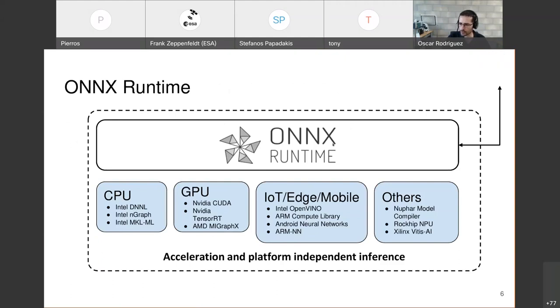We chose to use ONNX runtime because it has native support of ONNX and it also supports different hardware accelerations. You have CPU accelerations with Intel libraries. You have GPU accelerations with CUDA or ROCm. You have hardware acceleration for other platforms and for other hardware that is specific for FPGAs. And that way we can run accelerated inference.